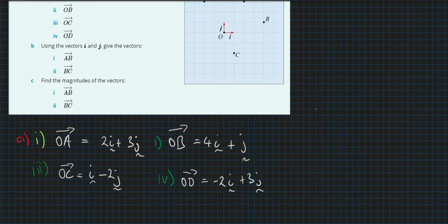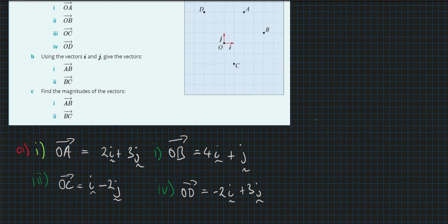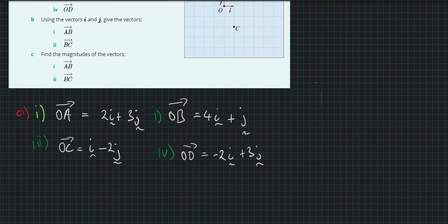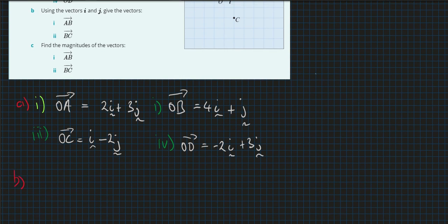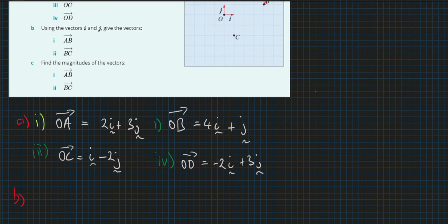Part B wants us to use the I vectors to find A to B and B to C. There are two ways of doing this. Reading off the graph: we go one, two — that's two I — and then down, down, so that's minus two J. So you can see straight away that A to B equals two I minus two J.